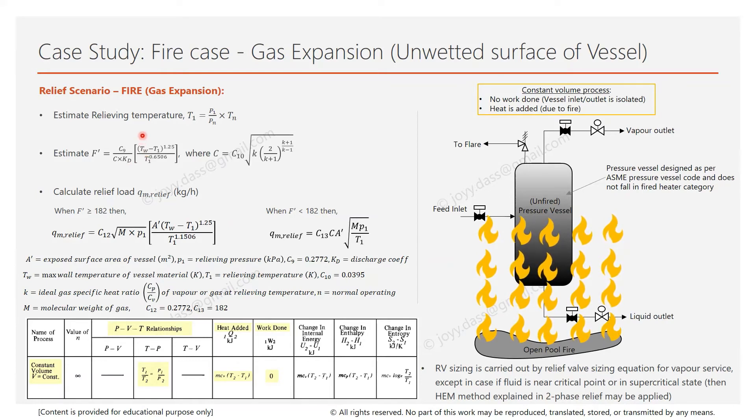Tw is the wall temperature of the metal. For carbon steel it is 593 degrees Celsius or 866 degrees Kelvin. T1 is the relieving temperature calculated here. Using this formula, estimate F'. If F' is greater than or equal to 182, then use this formula to estimate the relief load, which is in kg per hour.